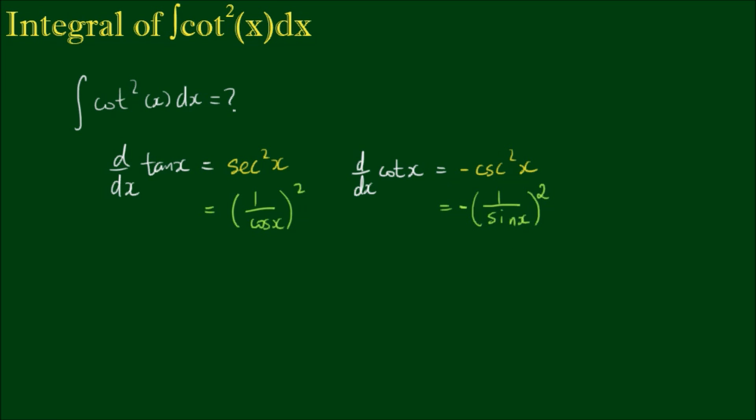So these two results are very closely related, but it's the derivative of the cotangent of x that will help us to integrate the cotangent squared of x.